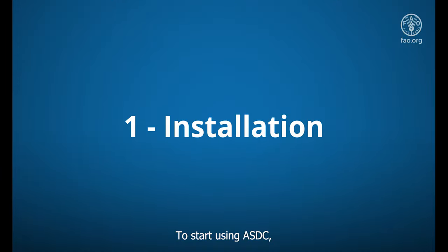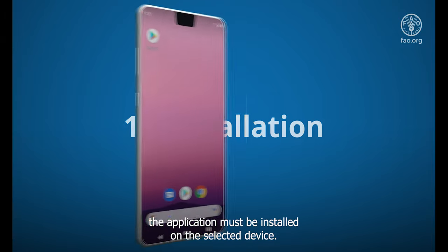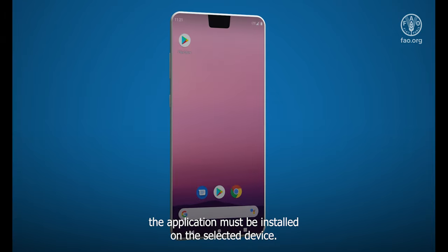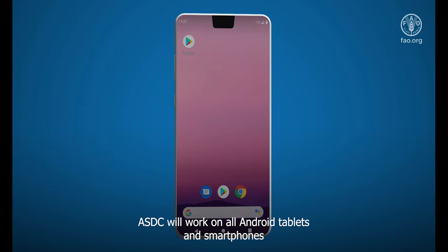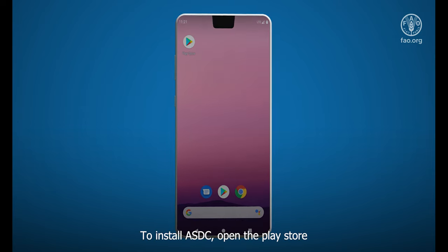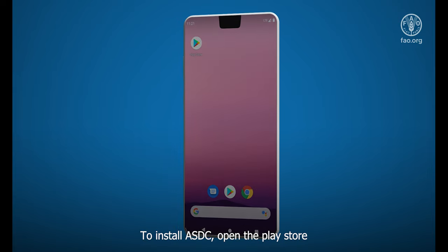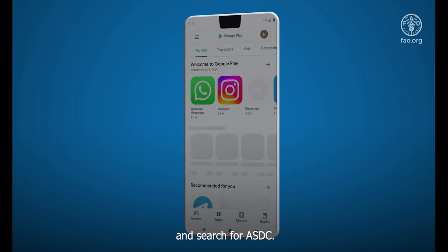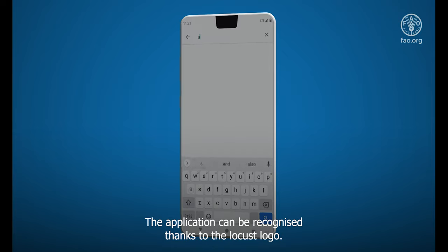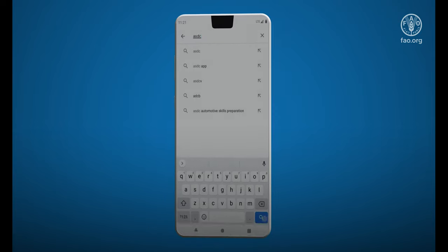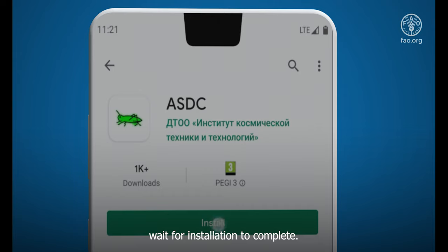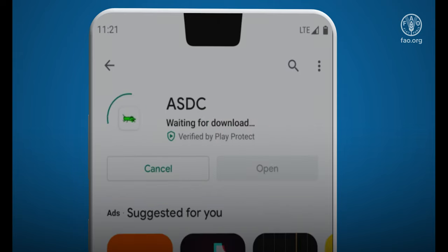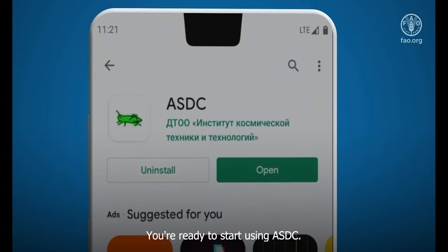To start using ASDC, the application must be installed on the selected device. ASDC will work on all Android tablets and smartphones. To install ASDC, open the Play Store and search for ASDC. The application can be recognized thanks to the LOCUS logo. Now tap on install and wait for installation to complete. You're ready to start using ASDC.